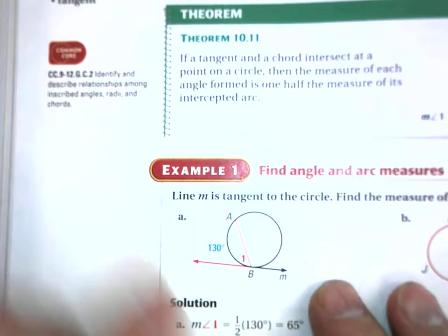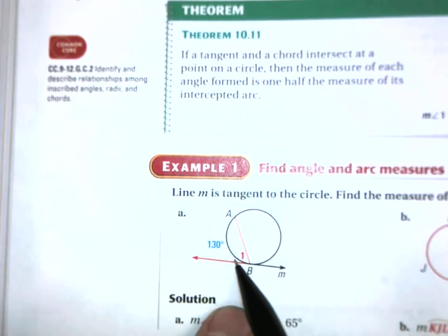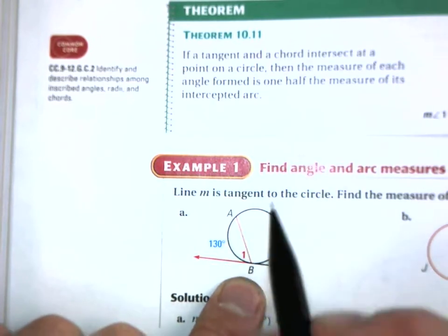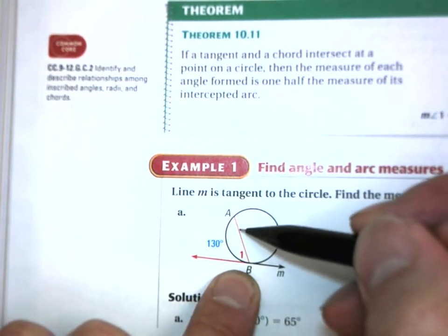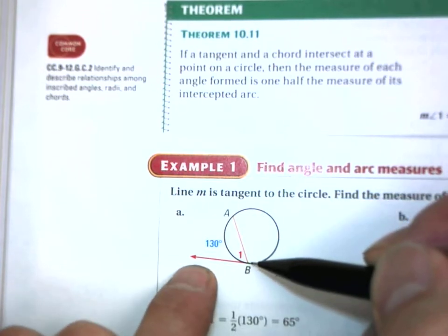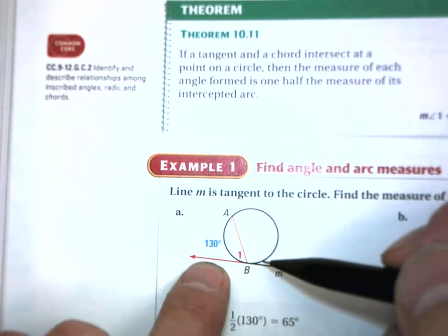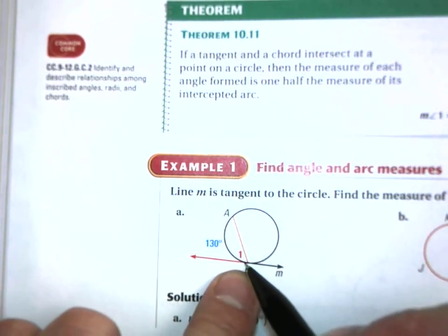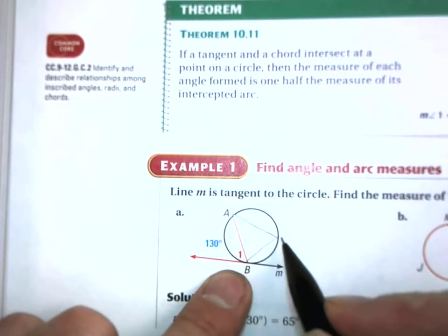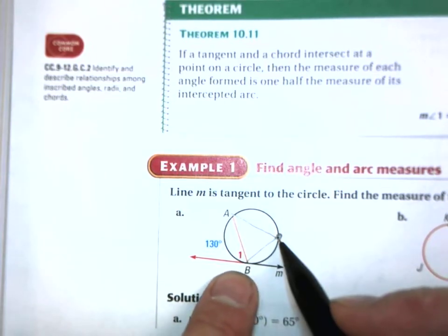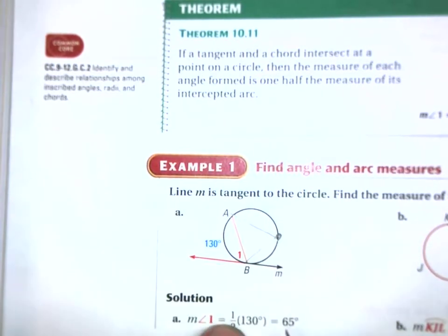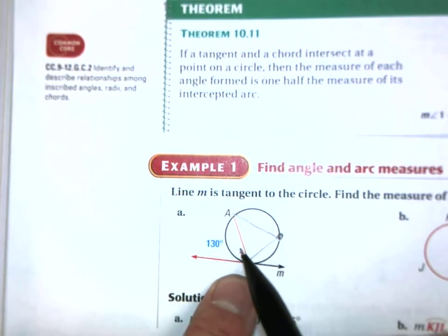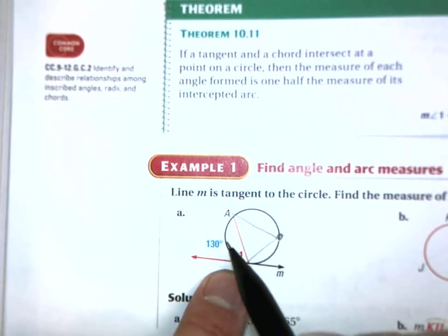Let me show you some examples from the textbook. They want us to find the measure of this angle. The vertex is on the circle, so it is an inscribed angle, but notice that one of the rays is a chord going circle to circle, and the other part of the angle is a tangent line. Just as an inscribed angle would be half of its intercepted arc — half of 130 is 65 — the measure of angle 1 is also 65. It's one half of the same intercepted arc.